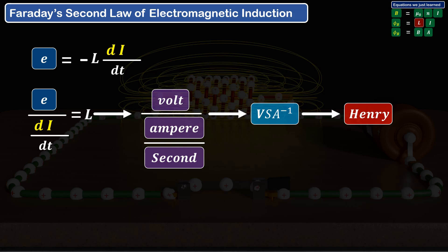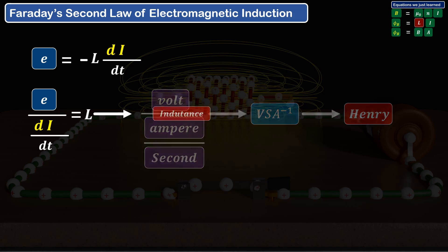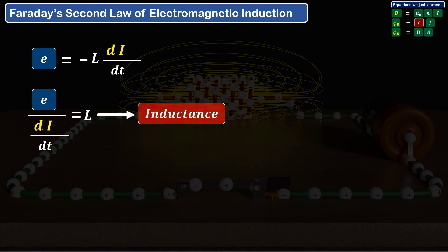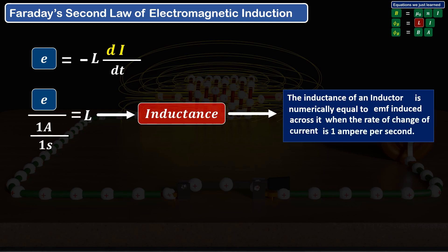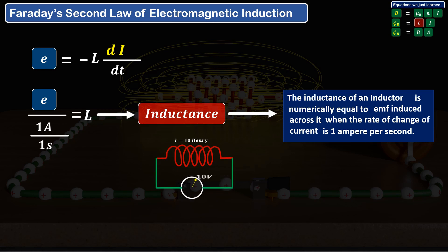Now let's try to understand the physical meaning of 1 Henry and the practical definition of inductance. In the equation of inductance capital L, if the current change rate is 1 ampere per second, then the inductance or power of the inductor is equal to the EMF induced in the coil. The inductance of an inductor is numerically equal to the EMF induced across it when the rate of change of current is 1 ampere per second. For example, if inductance is 10 Henry, that inductor can induce an EMF of 10 volts when current changes at 1 ampere per second.